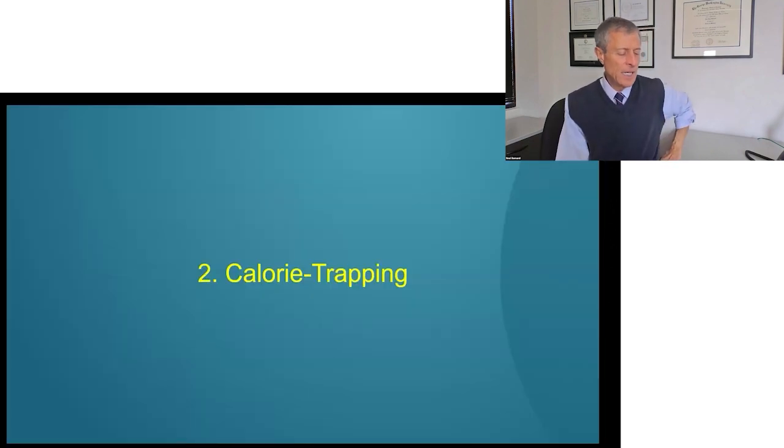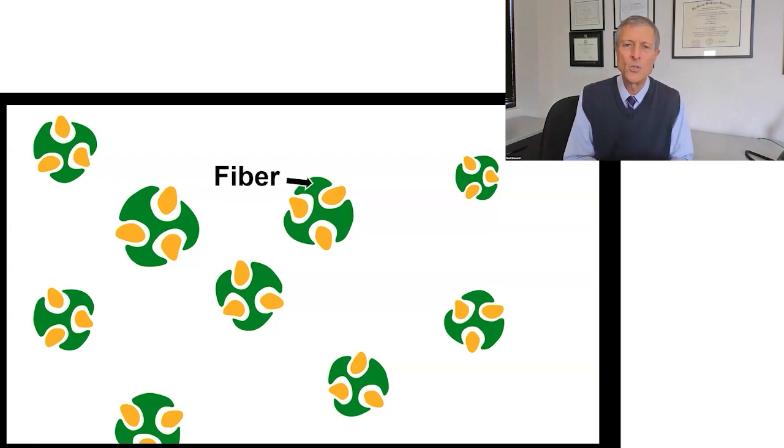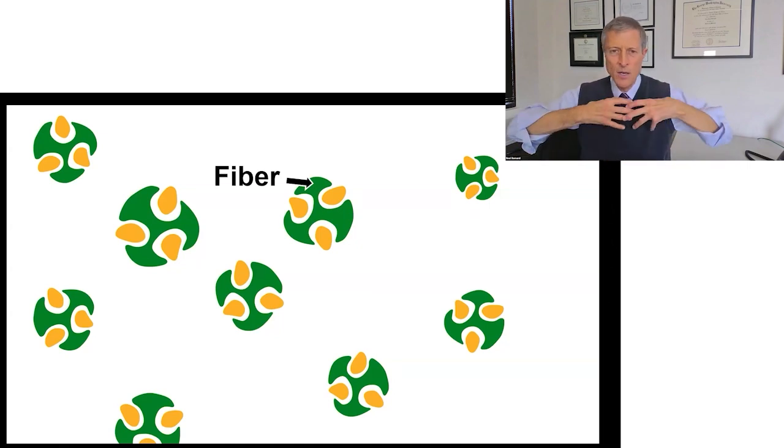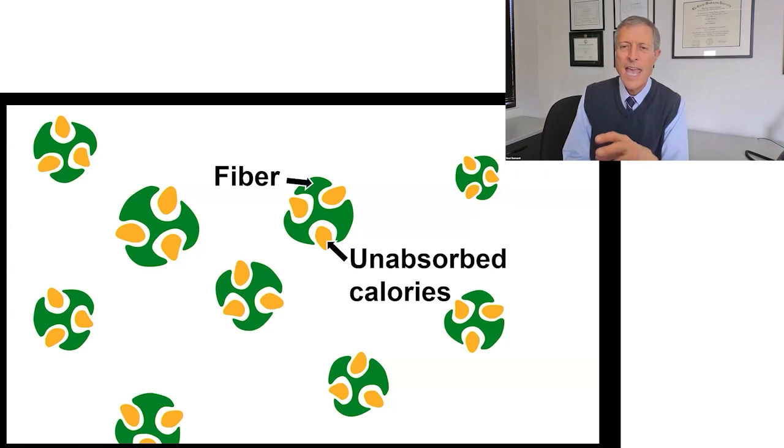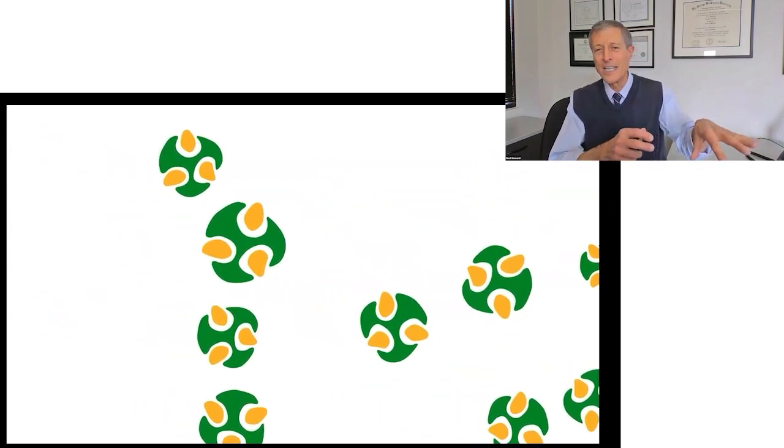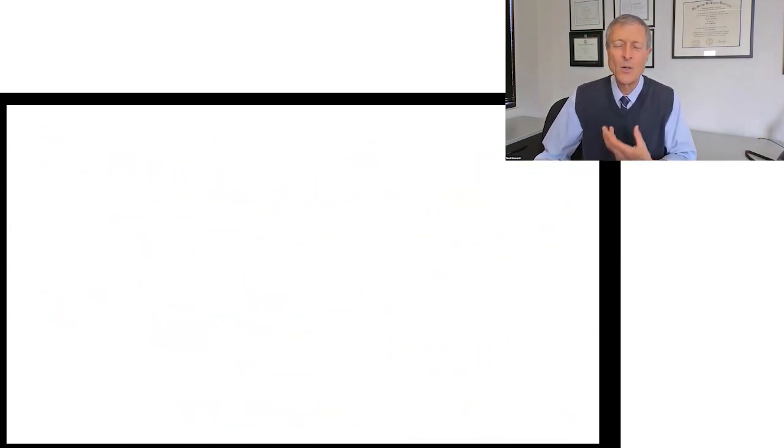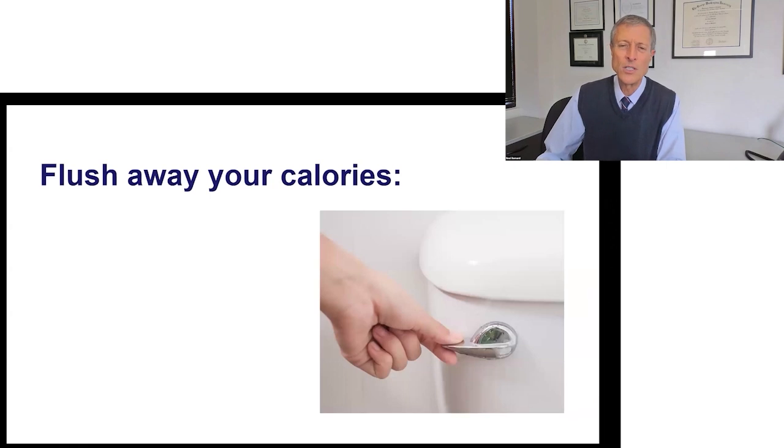The second point is calorie trapping. We've talked about appetite taming, but calorie trapping is this. You've got high fiber foods that you eat. When in your digestive tract, the fiber breaks apart because you chewed it all up. And it's now a million little sponges going down your digestive tract. And the fiber, like a sponge, is picking up unabsorbed calories. And those unabsorbed calories can't escape the fiber. The fiber just carries it out with the waste. Yes, it does. It goes along your digestive tract and you literally flush it down the toilet. That's right.